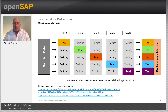One drawback of the hold-out method is that the evaluation may depend heavily on which data points end up in the training set and which end up in the test set, so the evaluation may be significantly different depending on how this division is made.